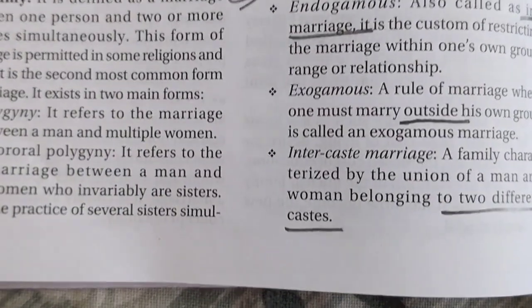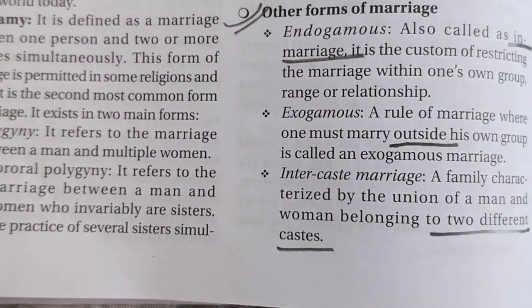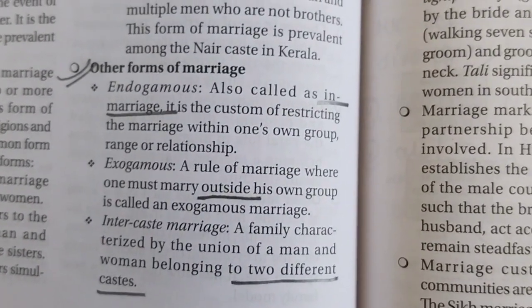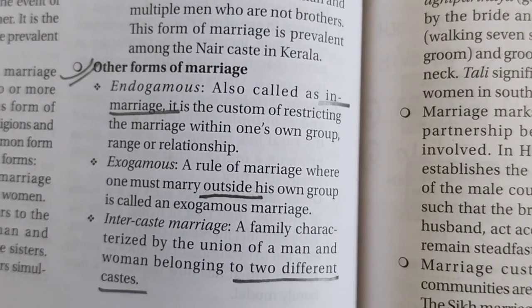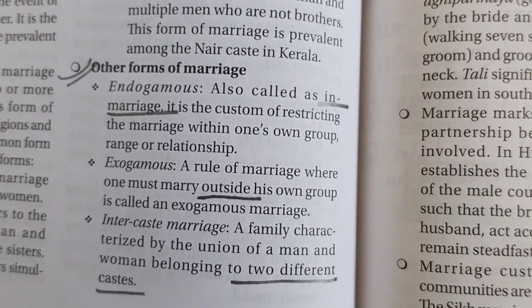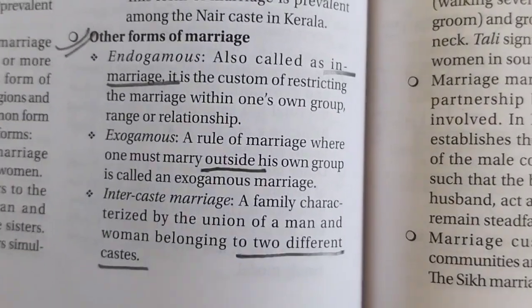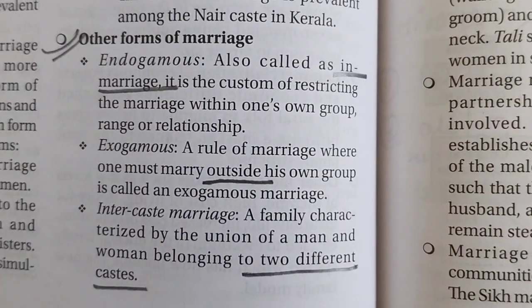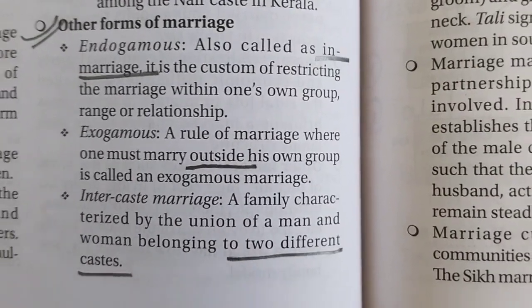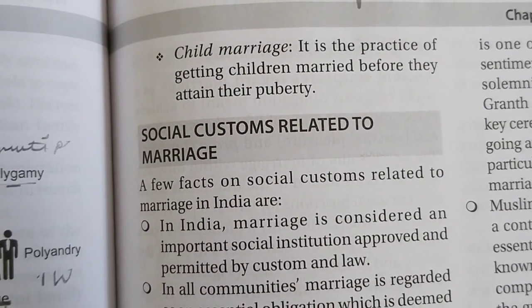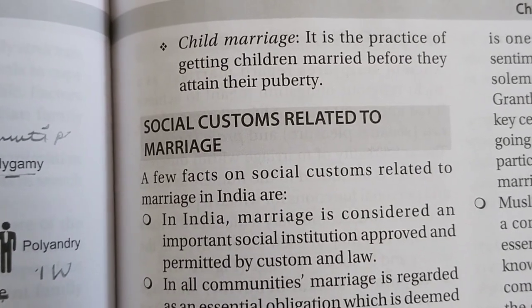Next is Other Forms of Marriage: endogamy, exogamy, intercaste marriage, and child marriage. In endogamy, marriage takes place within the same group or relationship — for example, marrying someone of the same surname. In exogamy, marriage takes place outside the group. Child marriage refers to marriage before the proper age.